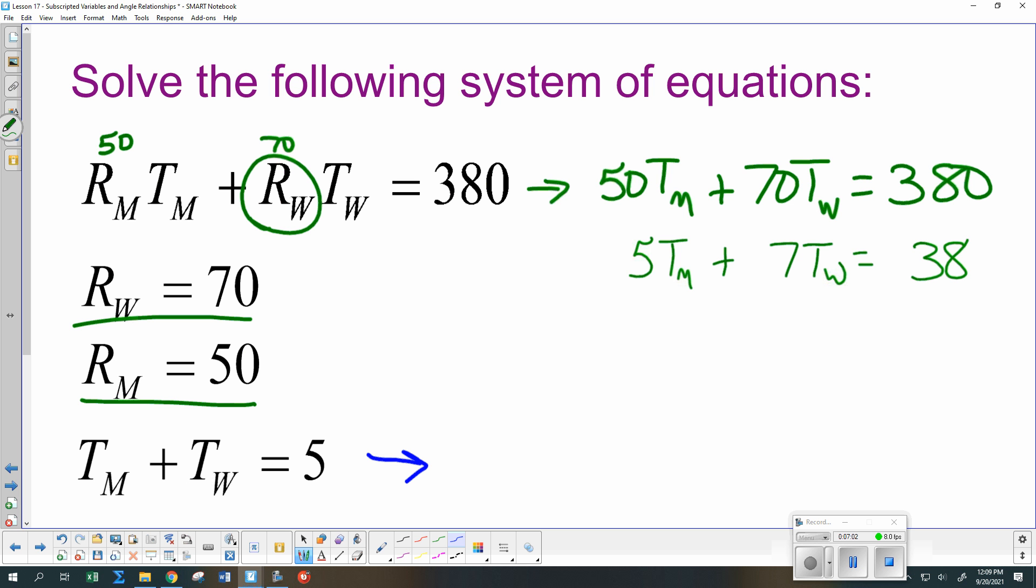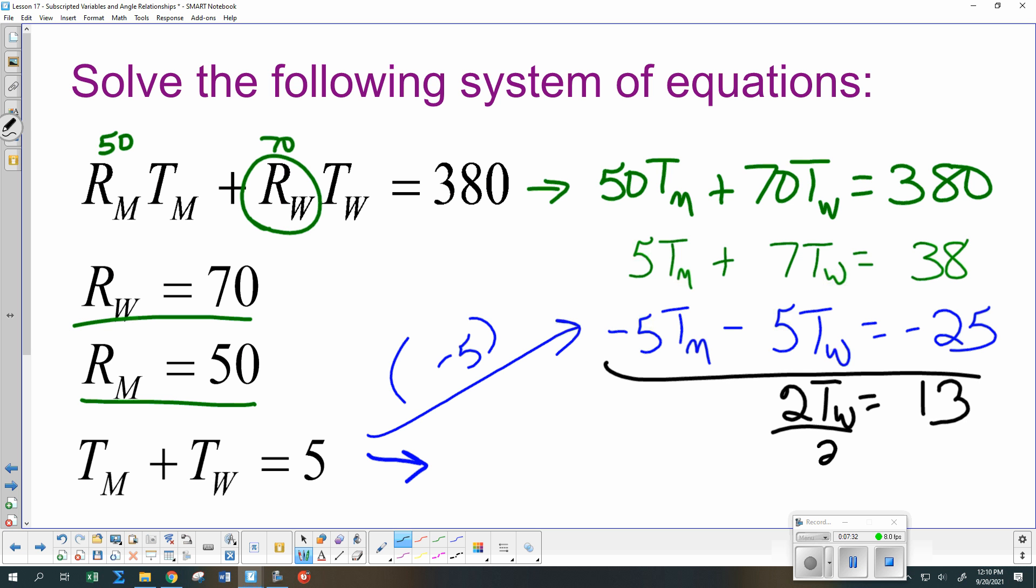And then maybe I take this one down here at the bottom. And what if I multiply it by how about negative 5? That will give me minus 5 TM minus 5 TW is minus 25. I'm not going to get real nice numbers on this one. 2 TW is 13. So divide by 2. TW is 6 and a half.